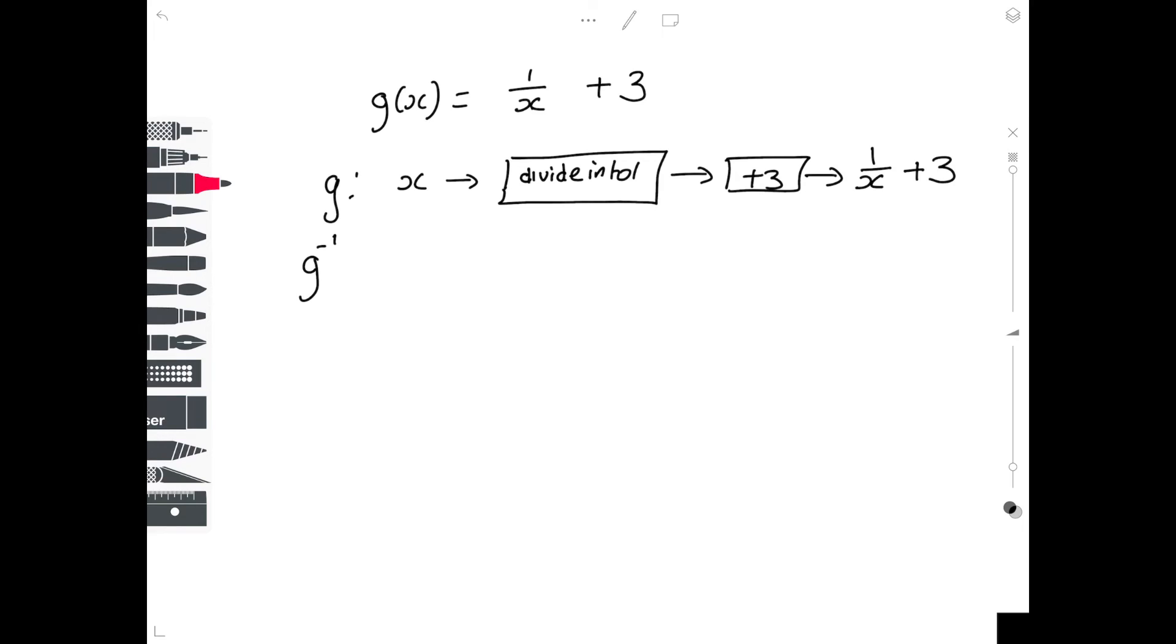OK, so coming back the other way to find g inverse, I'm going to start with some random number x. The opposite of add 3 is take away 3. The opposite, divide into 1, is a self-inverse. So it is also divide into 1.